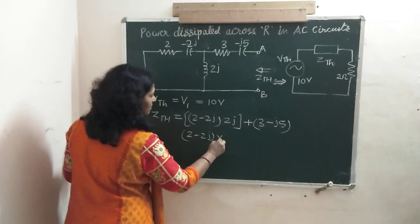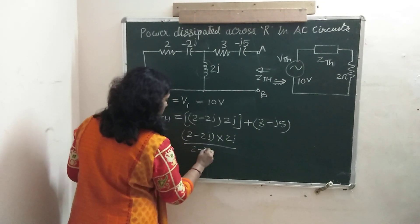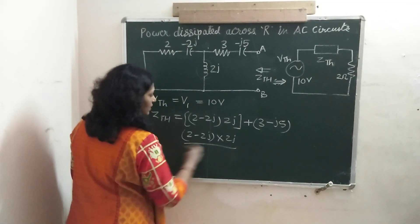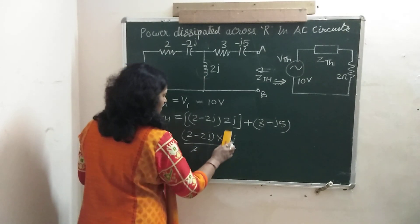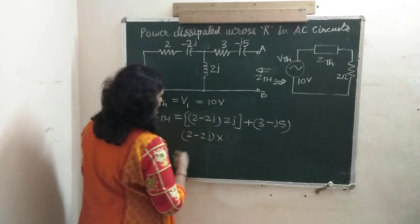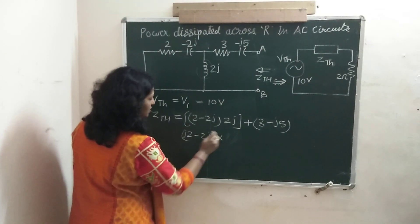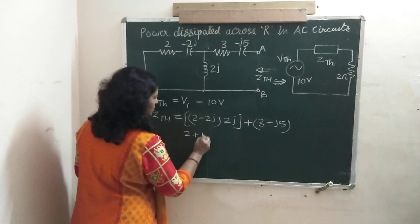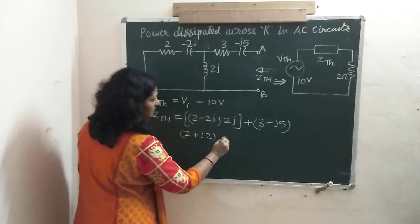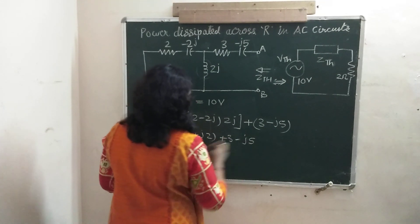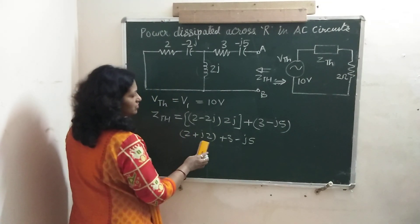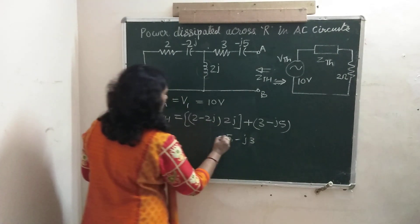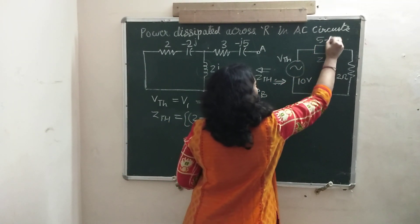This is 2 minus 2J multiplied by 2J and the sum of these in denominator. So here 2 will be cancelled and J will come in the numerator. So multiply it by J. This is J2. This is J square and this will make it plus 2. So the 2 plus J2 is the result of this term plus 3 minus J5. So this will become 5 minus J3. This is our ZTH, 5 minus J3.